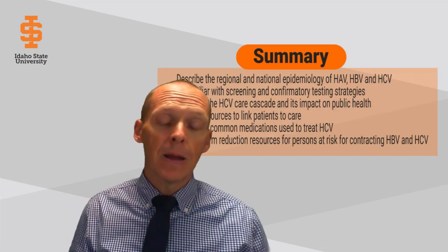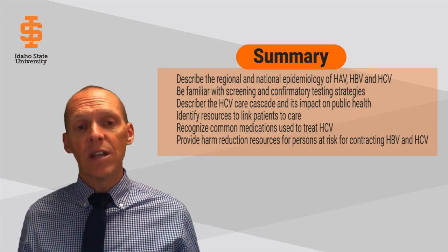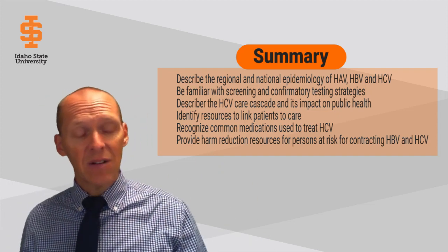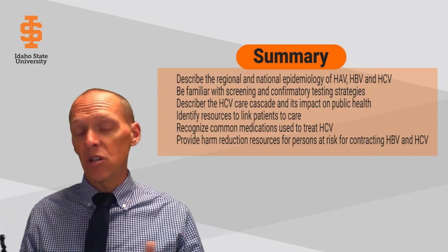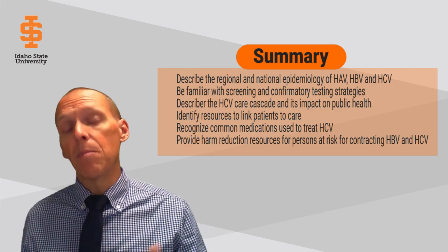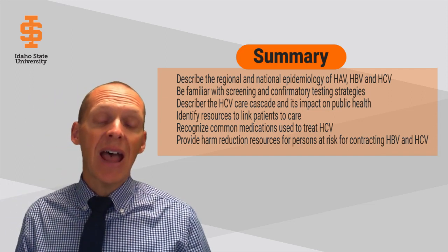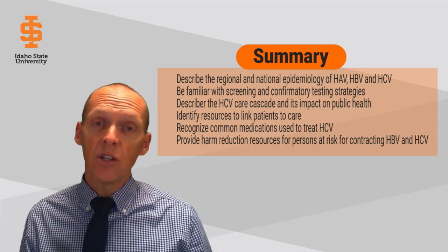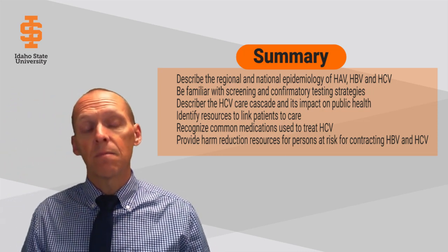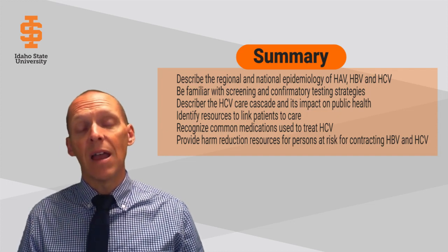To bring everything back together, understanding the nuances and differences between hepatitis A, B, and C — including different epidemiology, different rates of transmission, and different screening approaches — you should be able to describe some of the hepatitis C care cascade, understanding how to engage patients in different aspects to get them treated and cured. There should also be links through health departments or medical providers to get patients into care, understanding some of the medications and how they can lead to positive outcomes and cures. And lastly, risk reduction resources for patients looking to reduce the likelihood of contracting hepatitis B and C, looking at vaccines for hepatitis A and B, as well as other harm reduction strategies.